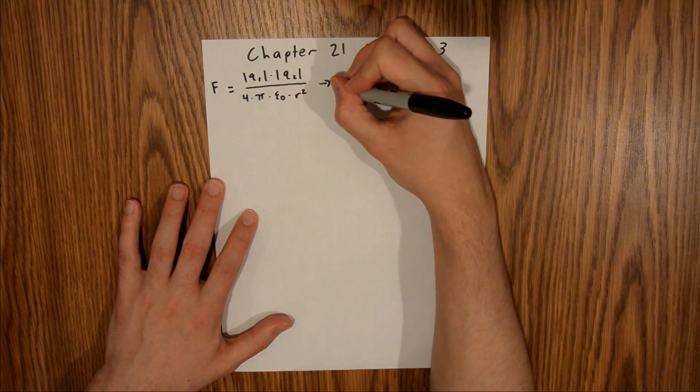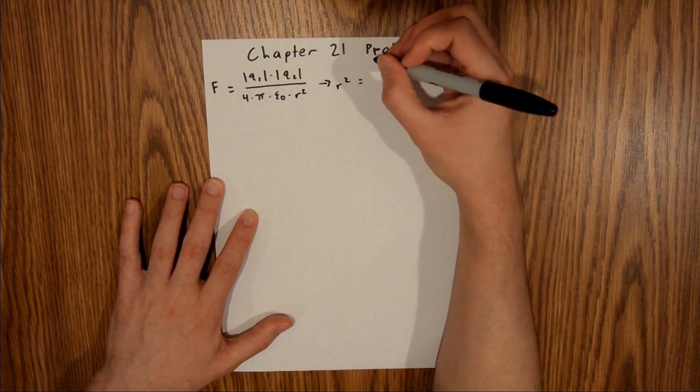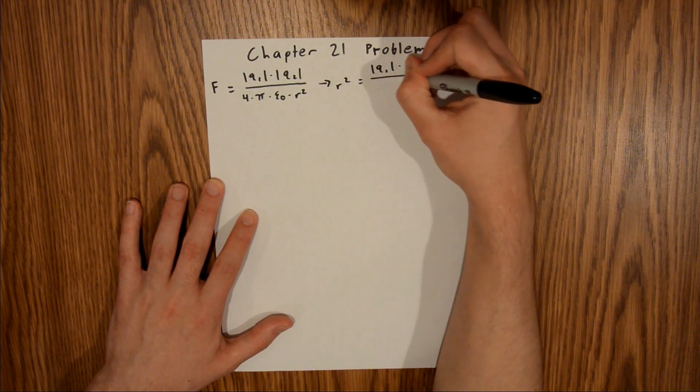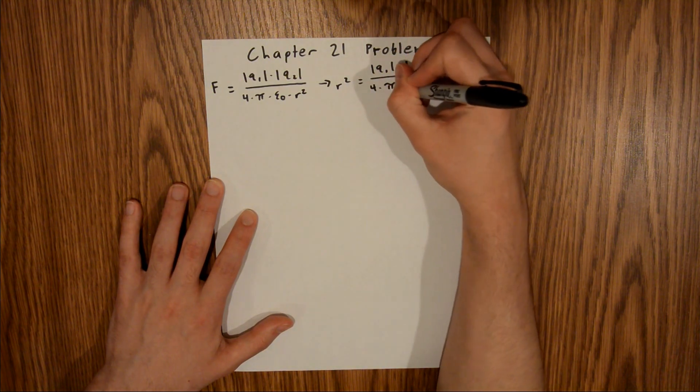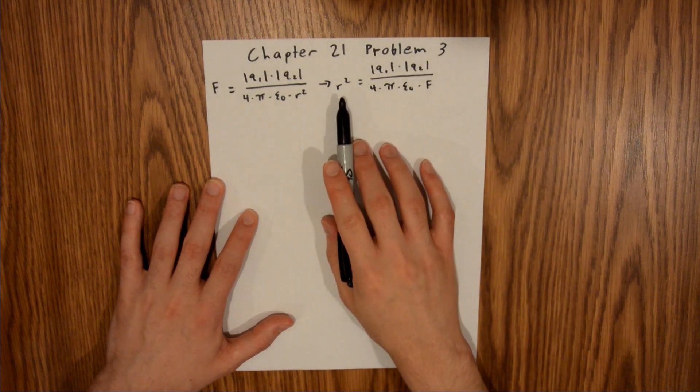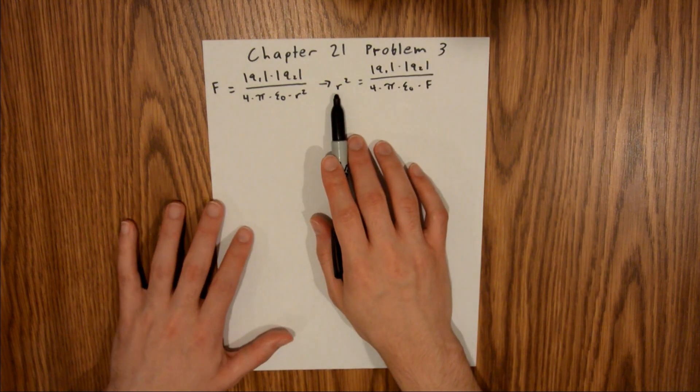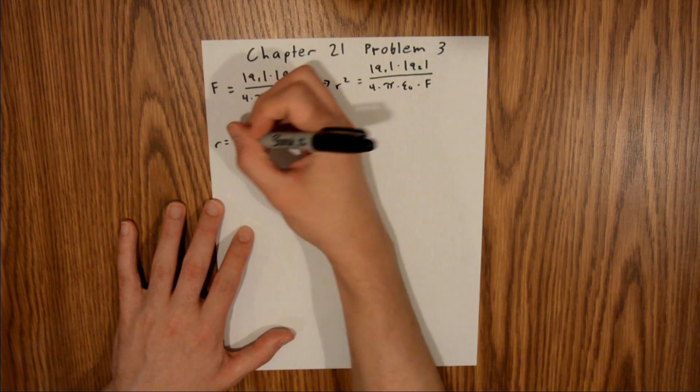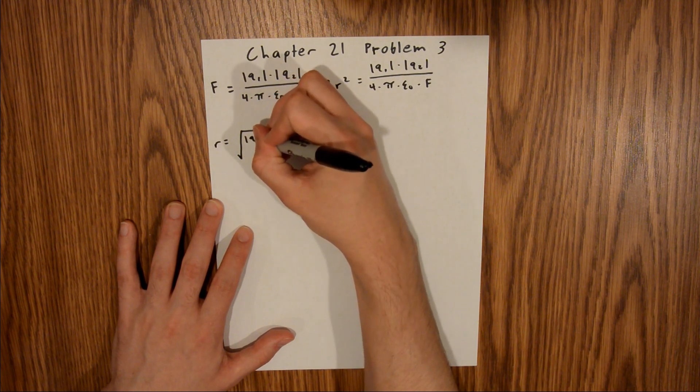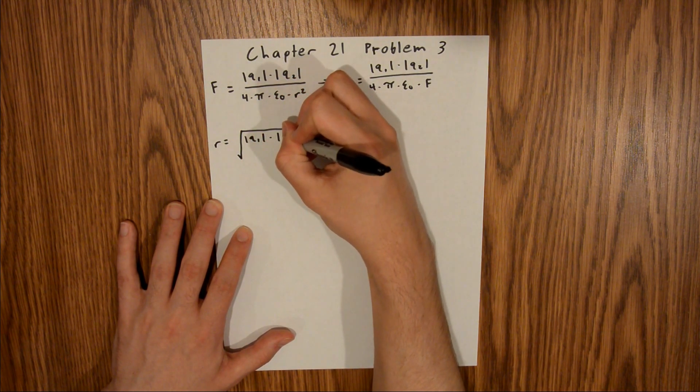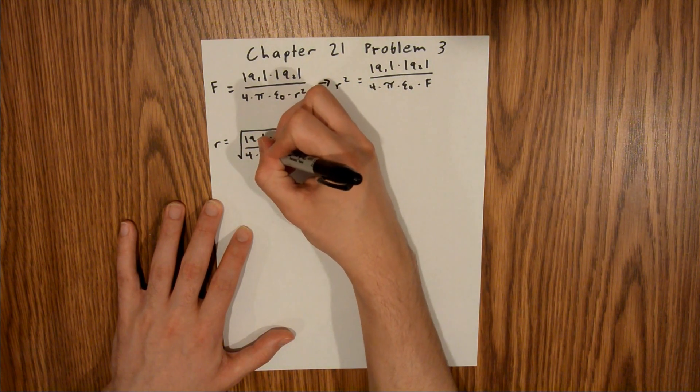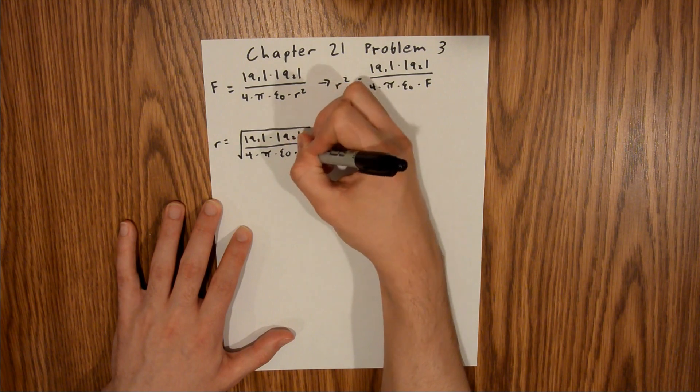We're going to find that r squared is equal to the absolute value of charge 1 times the absolute value of charge 2, divided by 4 times pi times epsilon naught times f. Now we can take the square root of both sides to isolate that r, and so that will give us r is equal to the square root of the absolute value of charge 1, times the absolute value of charge 2, all over 4 pi times epsilon naught times the force.